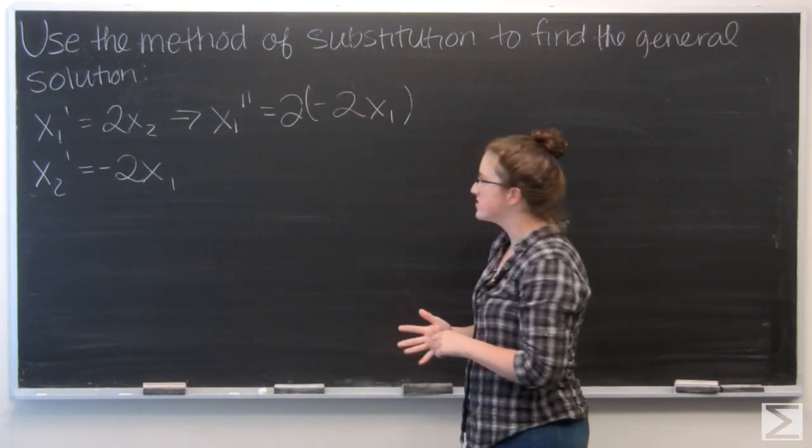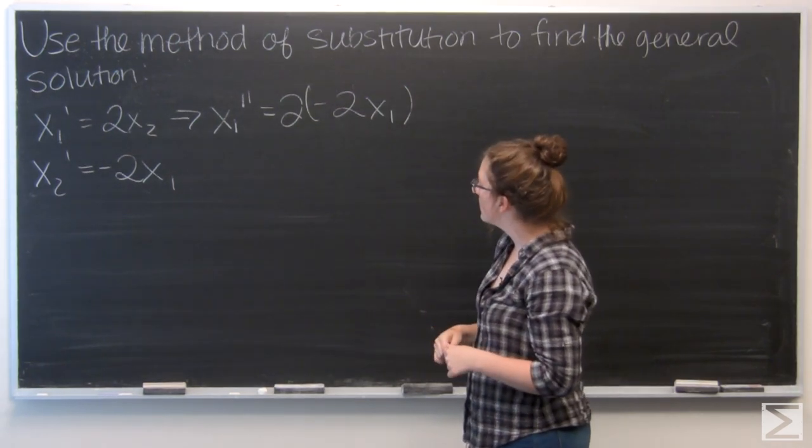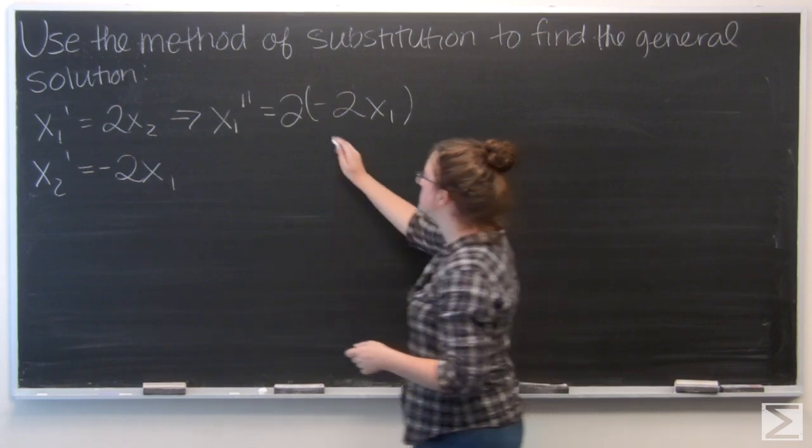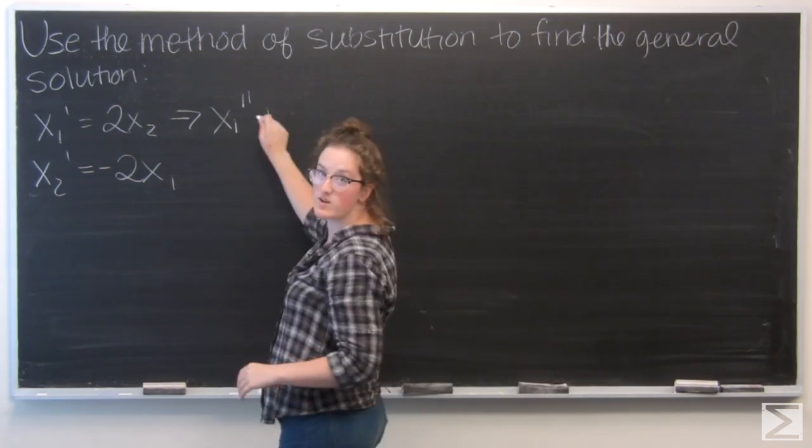So if I set this equal to 0, I will get x1 double prime plus 4x1 equals 0.